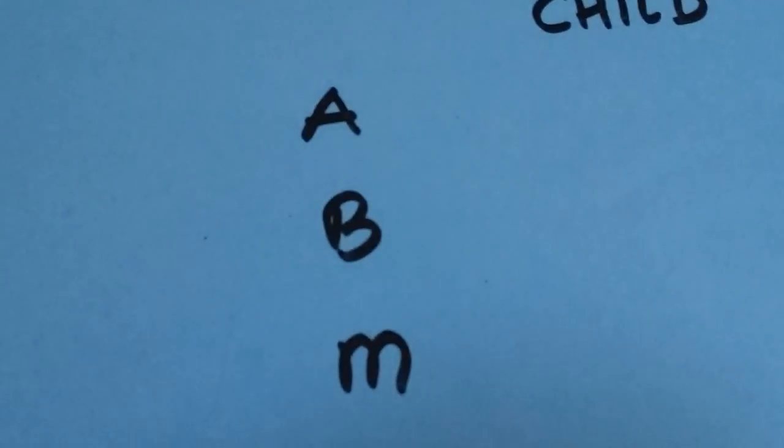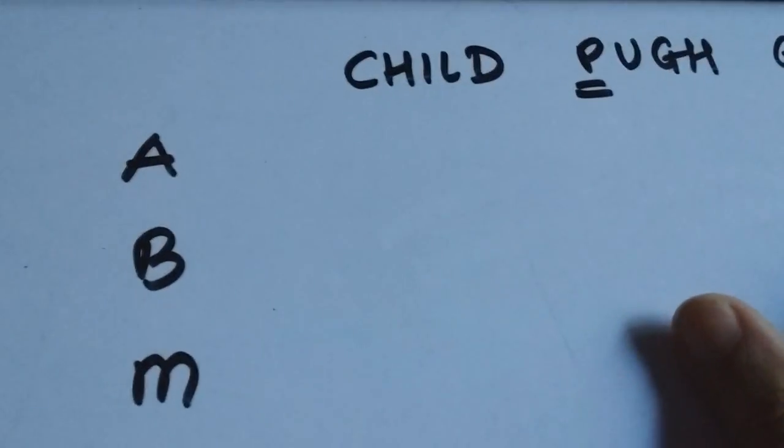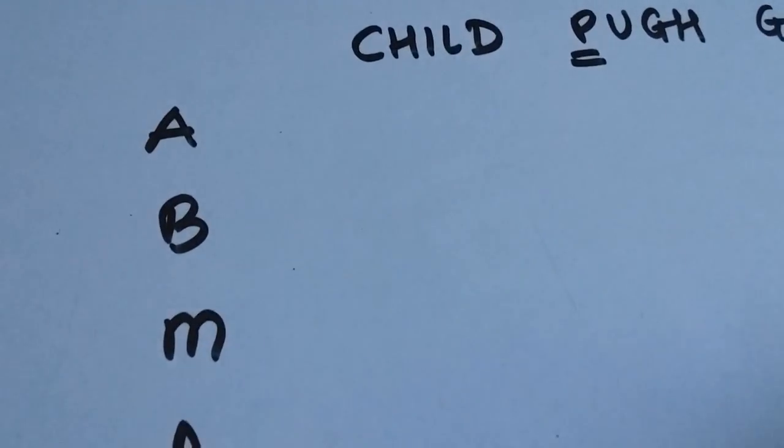Now what happens is, if you're like me and you have a lot of mnemonics up your sleeve, you kind of forget what the mnemonic was, and that's okay. You kind of make an association to remember the mnemonic. Like some people were like, I can't remember ABMAN for Child-Pugh's grading system.